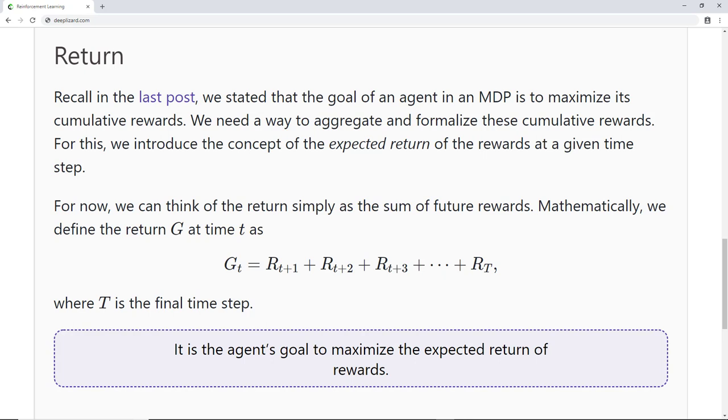Now, in our definition of the expected return, we introduced big T as the final time step. When the notion of having a final time step makes sense, the agent-environment interaction naturally breaks up into subsequences, called episodes. For example, think about playing a game of Pong. Each new round of the game can be thought of as an episode, and the final time step of each episode occurs when a player scores a point. Each episode ends in a terminal state at time big T which is followed by resetting the environment to some standard starting state, or to a random sample from a distribution of possible starting states. The next episode then begins independently from how the previous episode ended.